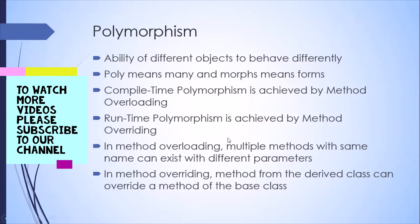In method overloading, you can have multiple methods with the same name, but the difference would be in the parameters being passed. The type of parameters and the number of parameters could vary across those methods. If the parameters are also the same along with the name, then you cannot overload in the same class — it will give you a compilation-time error. You need to have a different set of parameters in those two methods which have the same name.